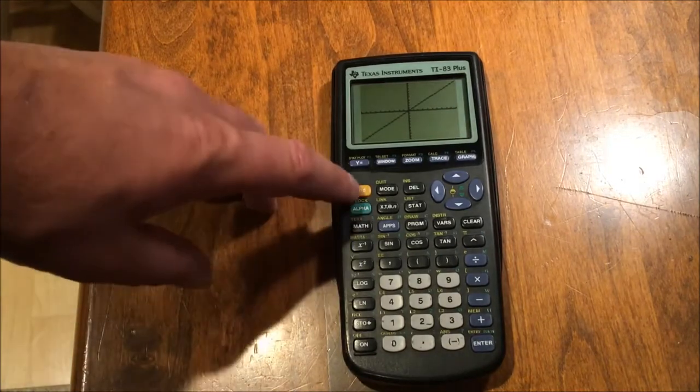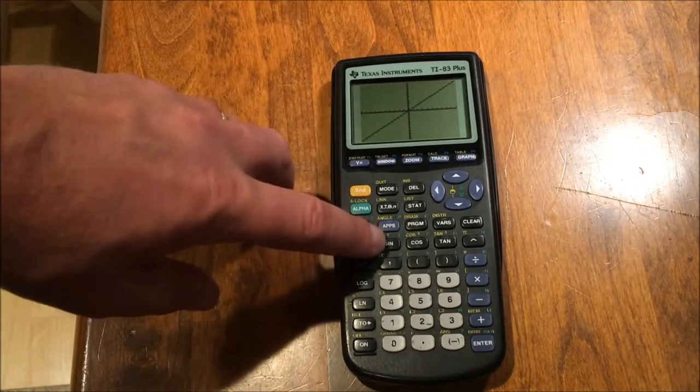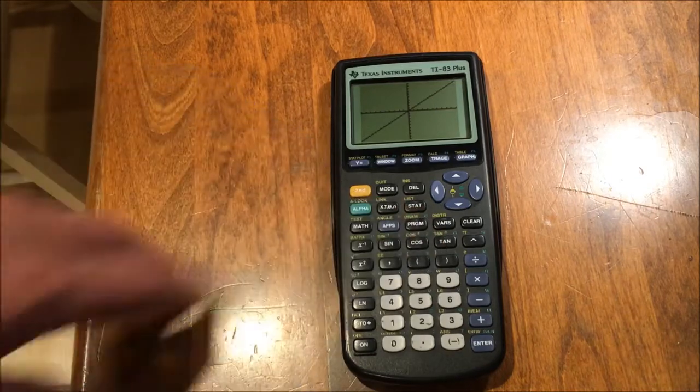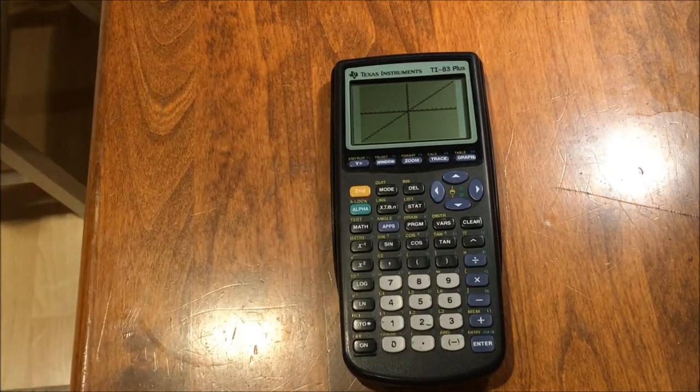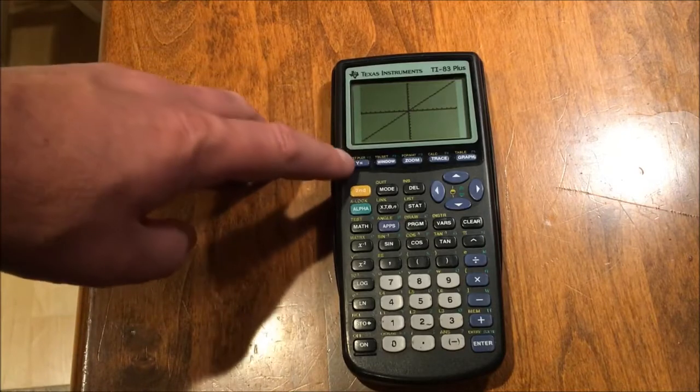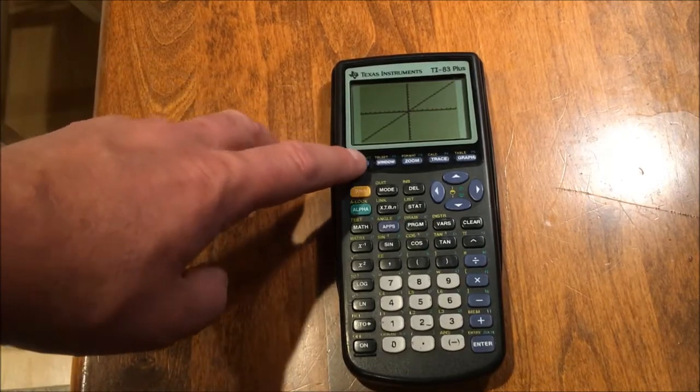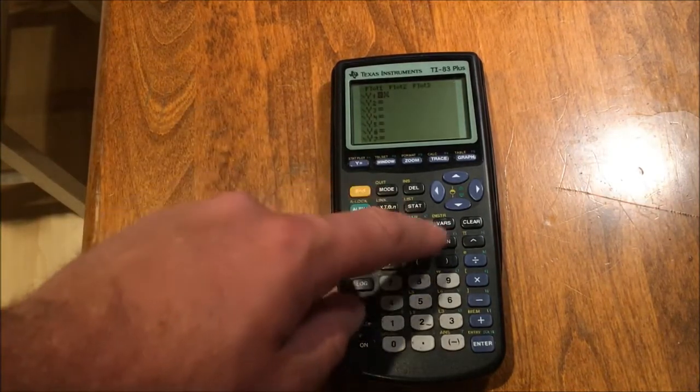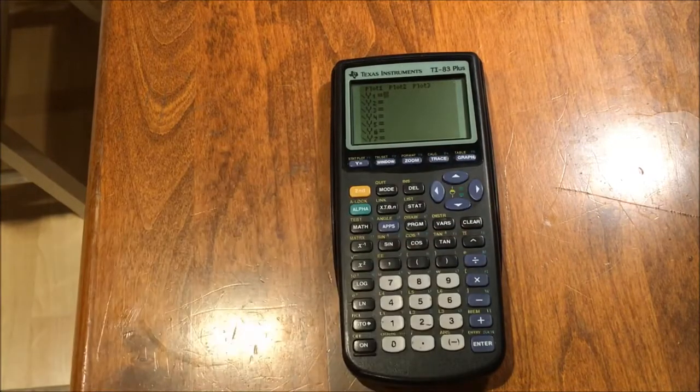And if I press the second, I get inverse sine, inverse cosine, and inverse tangent. So, let's say I wanted to erase this graph, and start with a new graph. Press y equals, and then clear your graph.